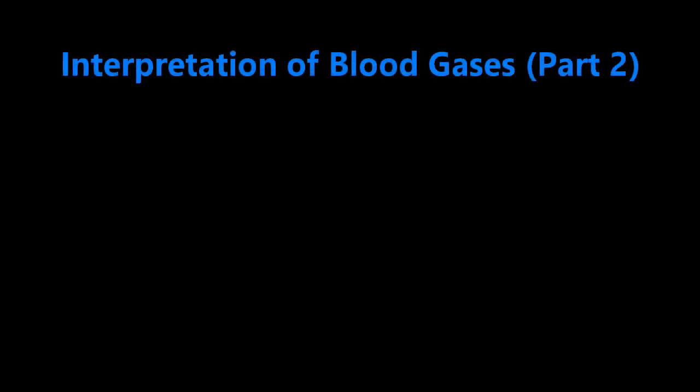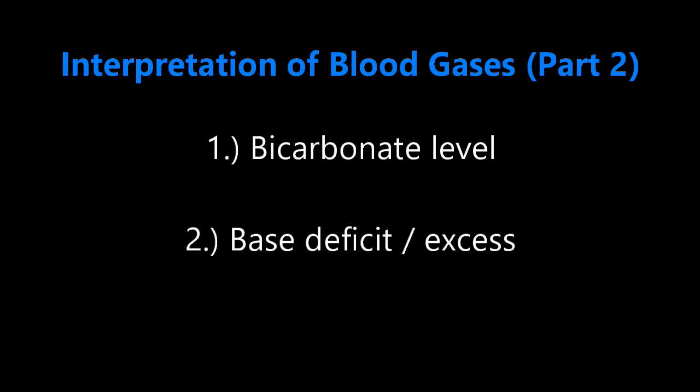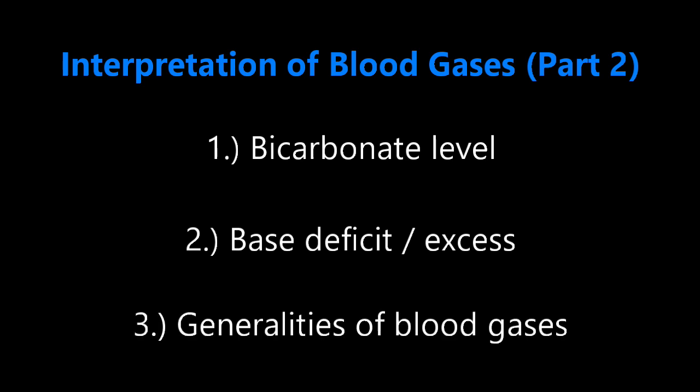In this video we're going to go over three different topics. The first is the bicarbonate level — what is normal and what information having the bicarbonate level in the gas can give us. The second is the base deficit or the base excess. And the third is the differences between arterial, capillary, and venous blood gases.